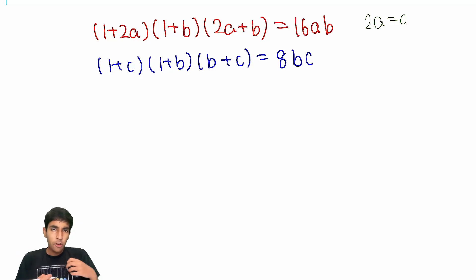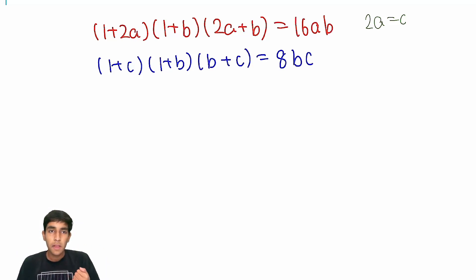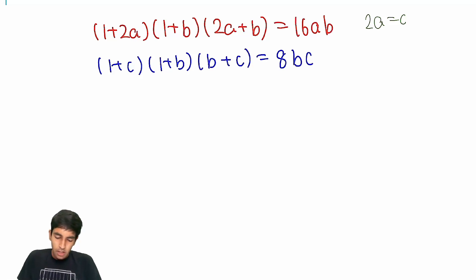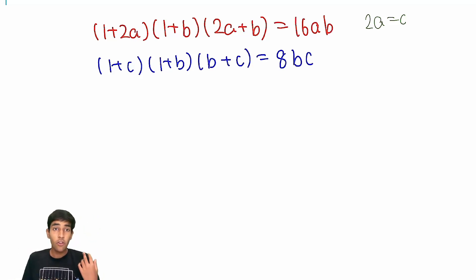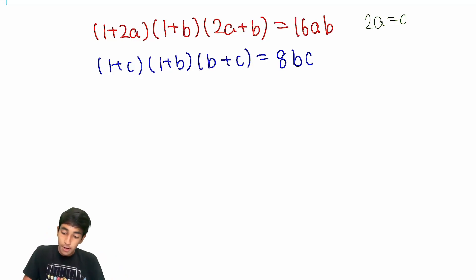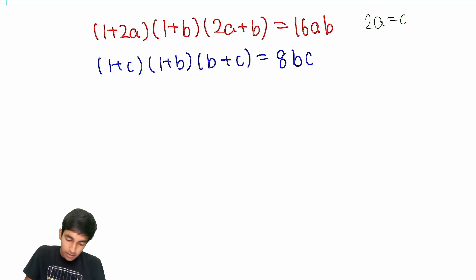We're talking a lot about upper bounds, so maybe we should try some inequality work. The first thing you might try is AM-GM — if you know AM-GM, it's good for minimizing sums and maximizing products. We've got a product here on the right, so let's try AM-GM and see what that gives us.